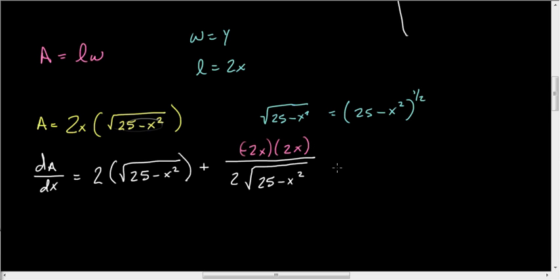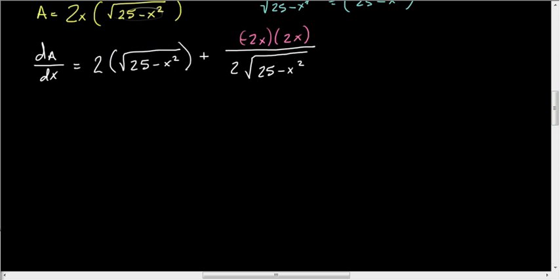So going through this, we have dA/dx equals 2 root 25 minus x squared, plus this 2 and that 2 cancel, so we have negative 2x squared divided by root 25 minus x squared.